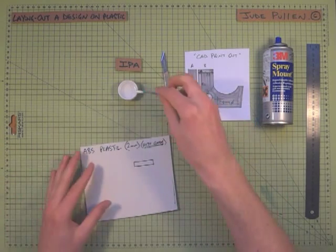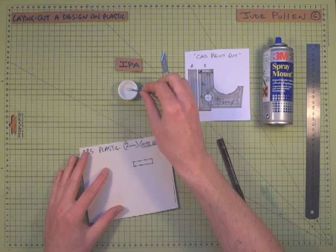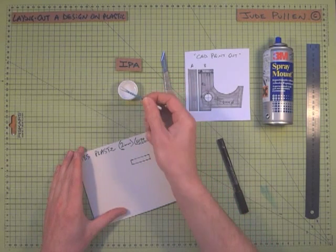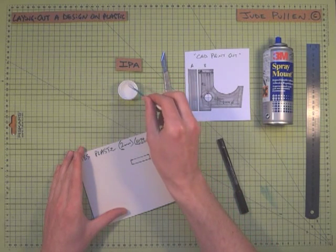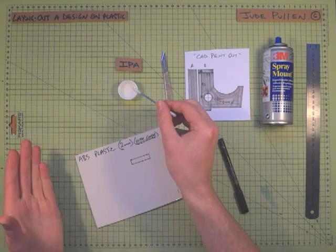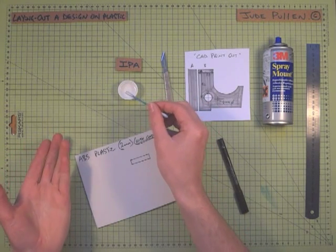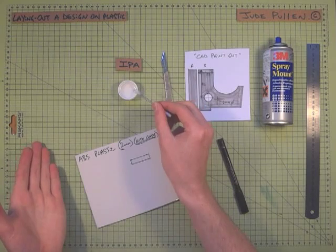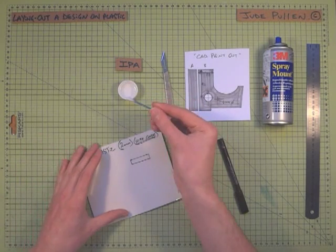But let's say actually I changed my mind and I wanted to adjust it or rub it out. One really nice technique is to use IPA, which is isopropanol alcohol, or alternatively, it's basically the same stuff as in nail varnish remover. It is a solvent, so be careful with it, and it is highly flammable.